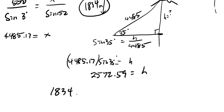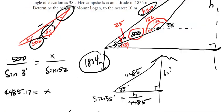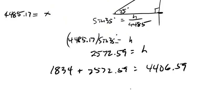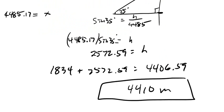So 1834 plus 2572.59 is 4406.59. And the question says to round to the nearest 10 meters. So that's going to be 4410 meters, the height of Mount Logan.